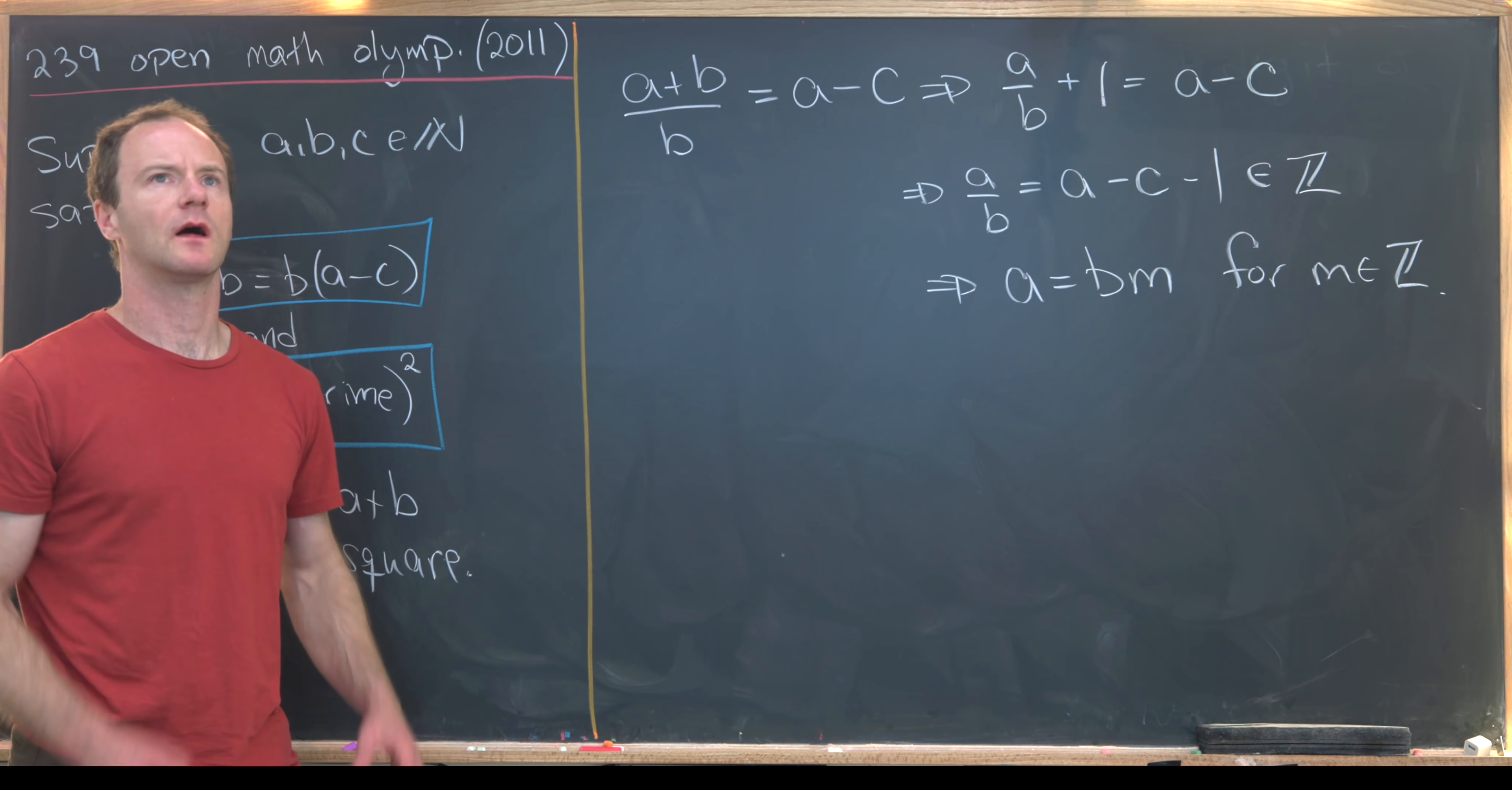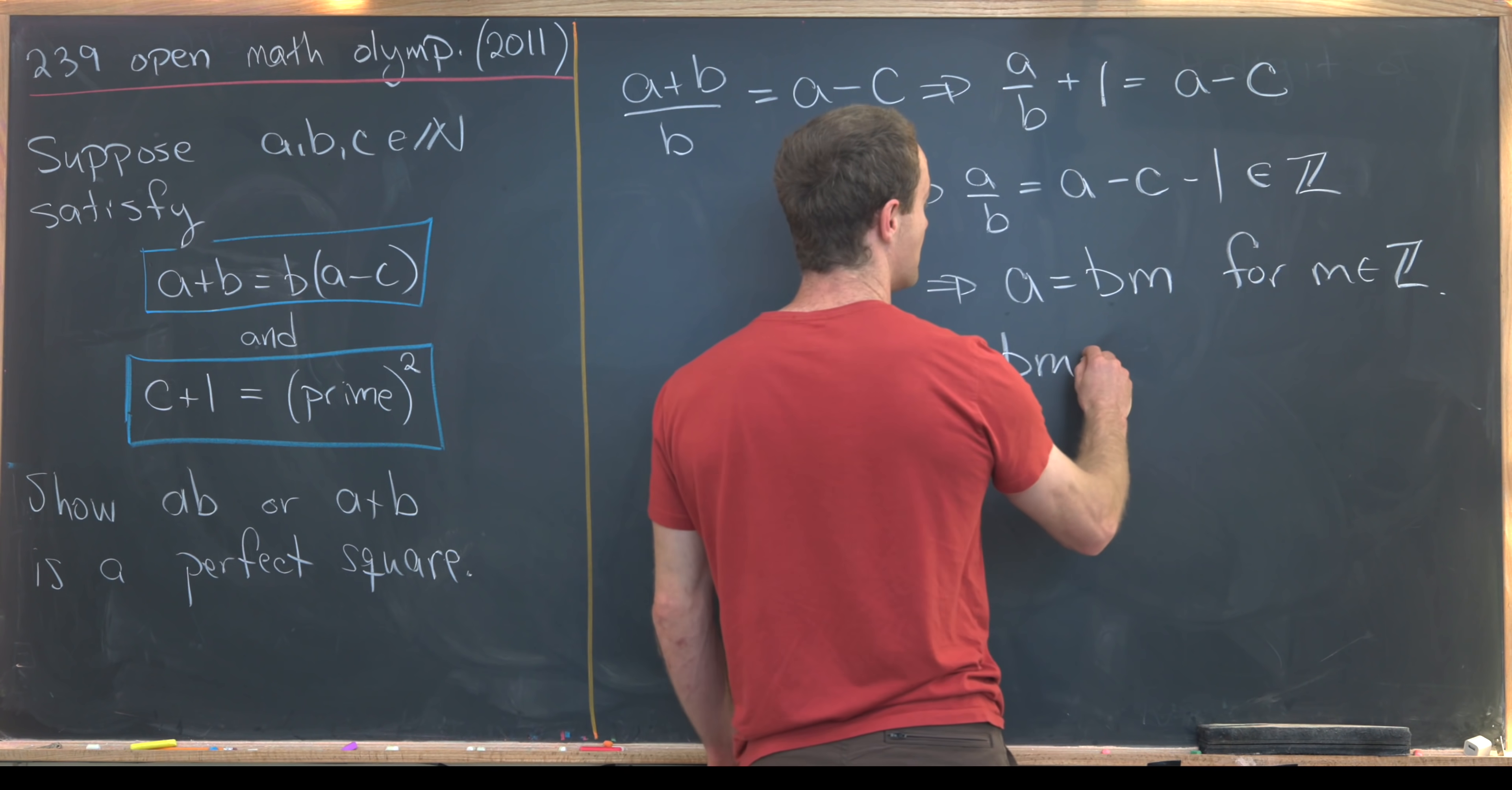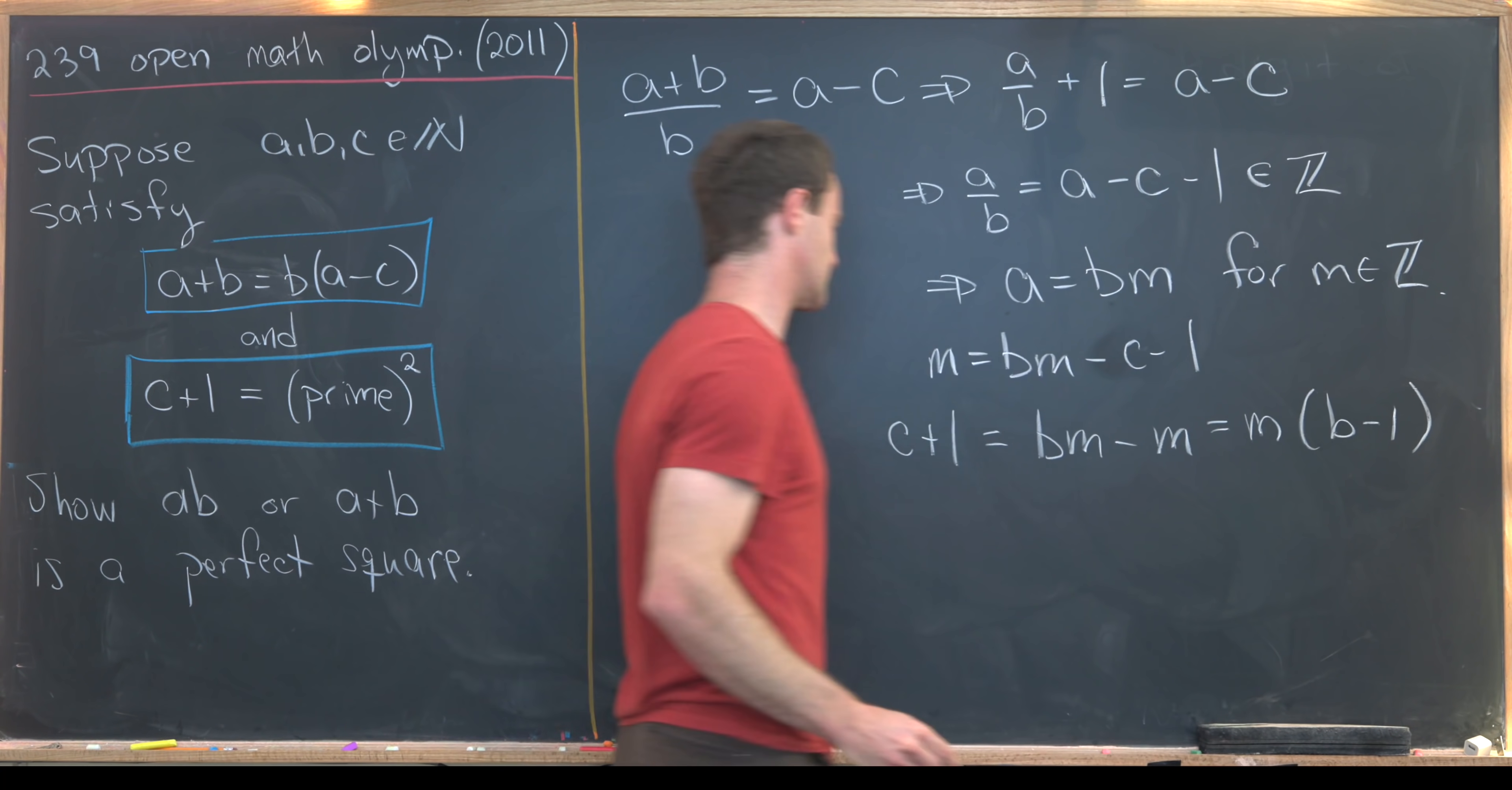Now we want to get a handle on the possibilities for m. So I'm going to take this value for a and plug it into our equation which is right upstairs. So a/b will be just m equals a, but that's bm minus c minus one. Now I'll rearrange this a little bit to give me c+1 = bm-m, which is equal to m(b-1).